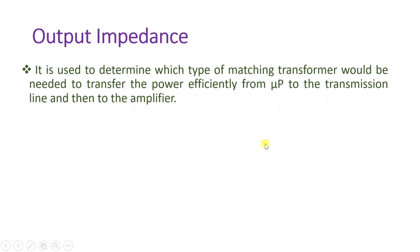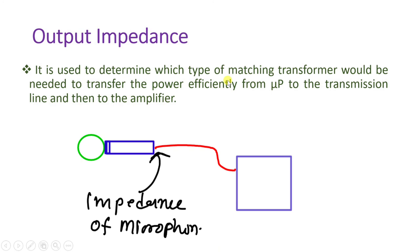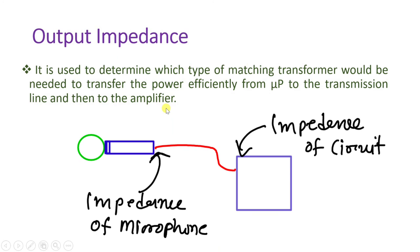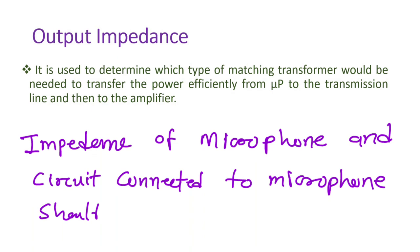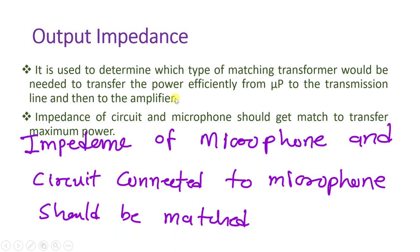Output impedance is used to determine which type of matching transformer is needed to transfer power effectively from the microphone to the transmission line and then to the amplifier. The impedance of the circuit and the microphone should be matched to transfer maximum power.